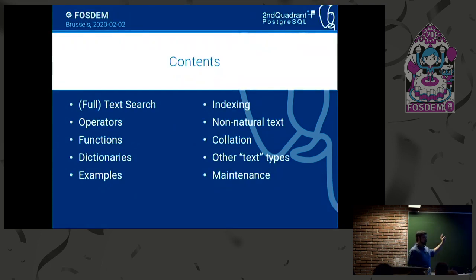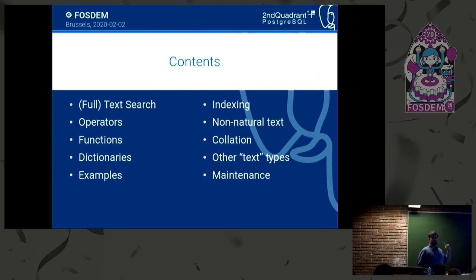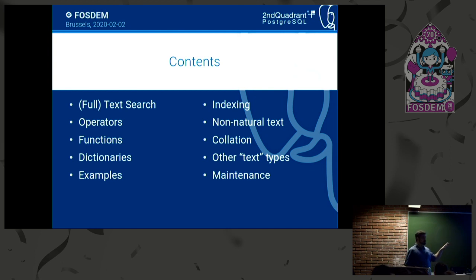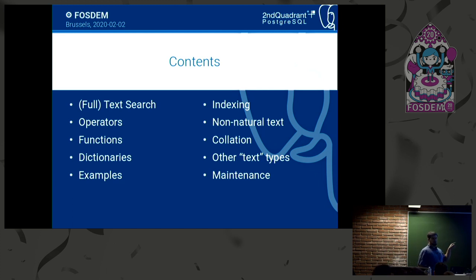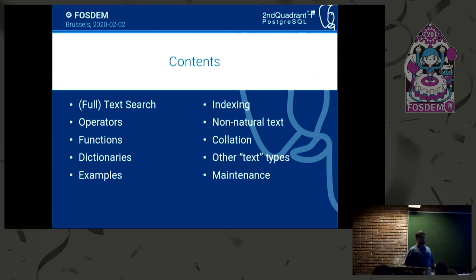We're going to look at what full text search means, operators and functions, what dictionaries are in Postgres, a few examples, how to index text in Postgres, how to deal with text that isn't human language or natural text, what collations are, what other things you can search for that are not strictly text, and how to keep this whole thing running.